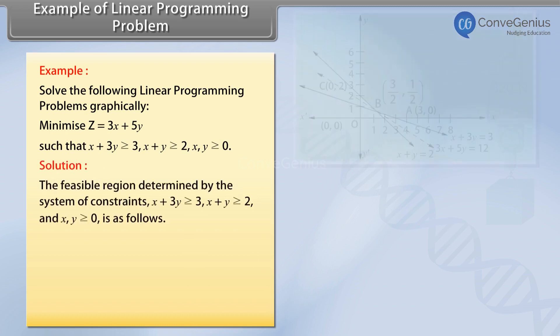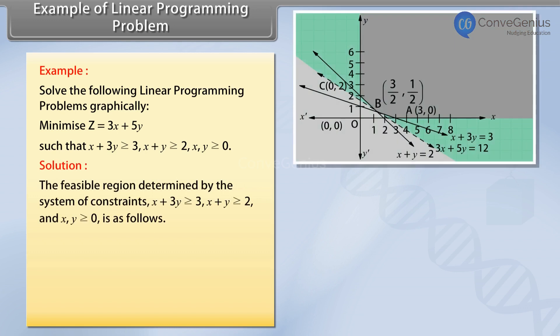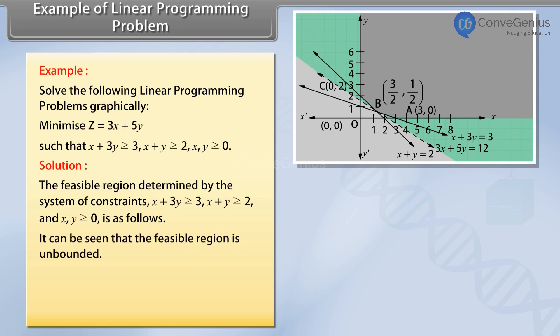Solution: The feasible region determined by the system of constraints X plus 3Y is greater than or equal to 3, X plus Y is greater than or equal to 2, and X, Y greater than or equal to 0, is as follows. It can be seen that the feasible region is unbounded.